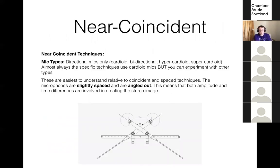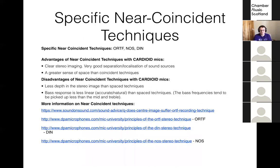The third stereo technique is called Near-Coincident — mics slightly spaced and angled out. There are three specific techniques: ORTF, DIN, and NOS, with links on the slide if you want specifics. The near-coincident technique gives a combination — a compromise between spaced and coincident. Left-to-right imaging is pretty good, not as good as XY. Sense of space is pretty good, not as good as a spaced pair. Overall you get quite an accurate representation of a space and the ensemble within it.